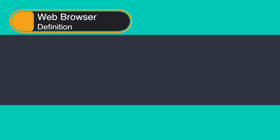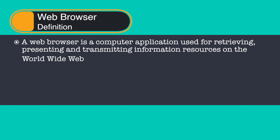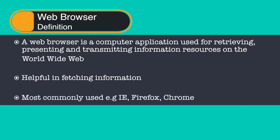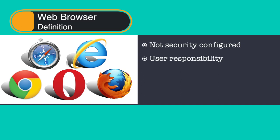To define a web browser, a web browser is a computer application used for retrieving, presenting and transmitting information resources on the world wide web. It is also helpful in accessing information provided by web servers and other infrastructure devices within private networks or files in a file system. The most common web browsers in use are Windows Internet Explorer, Microsoft Edge, Mozilla Firefox and Google Chrome. Web browsers are among the most commonly used applications on a computer. Those which come with your computer's operating system do not normally have security features configured by default. Therefore, it is up to you to enable the security options for secure web browsing.